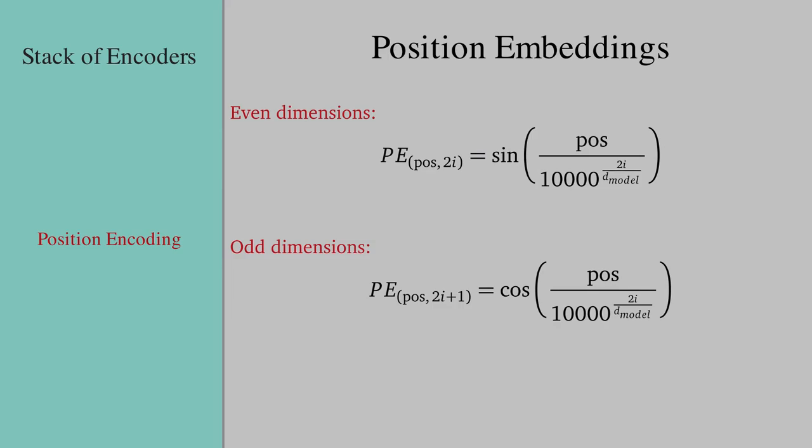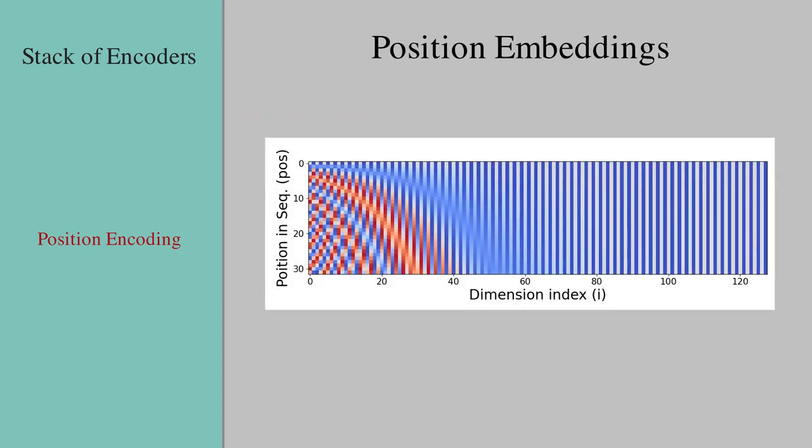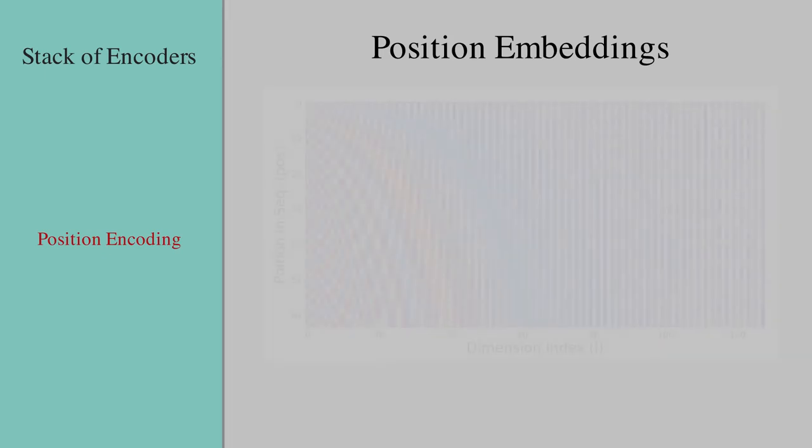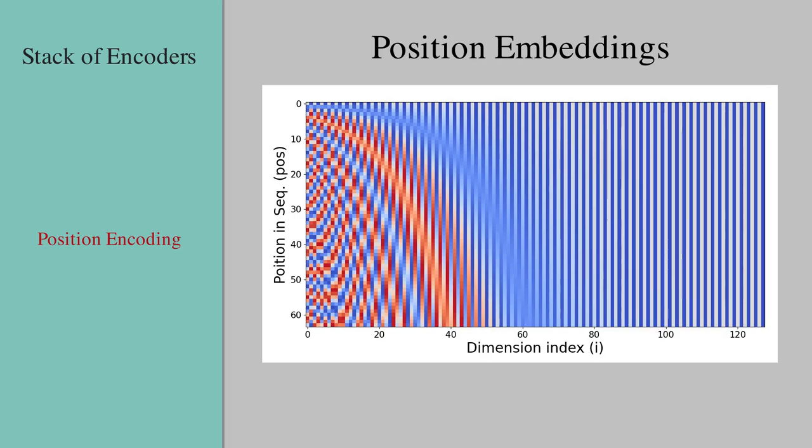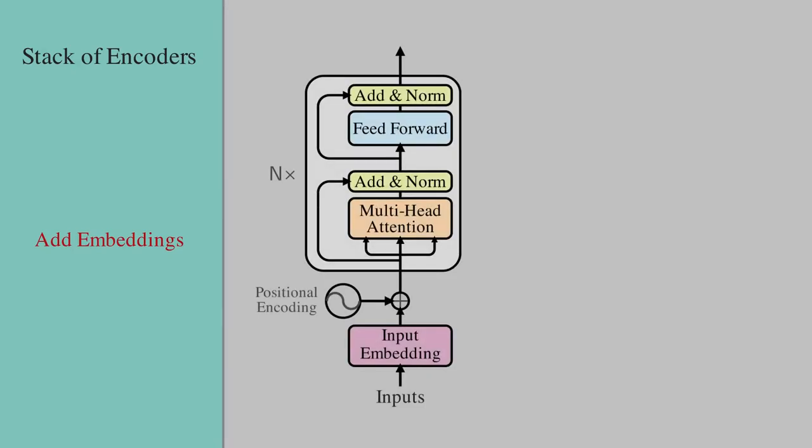For example, if sequence length is 32 and D model is 128, the result can be visualized as this heatmap shown here. Similarly, changing the sequence length to 64, the resulting position encoding would change to this new heatmap. Once we have the token embedding and the position embedding matrices, we add them together element-wise. And this will form the input to the first encoder layer. The other encoders will receive their input from their preceding encoder layer.